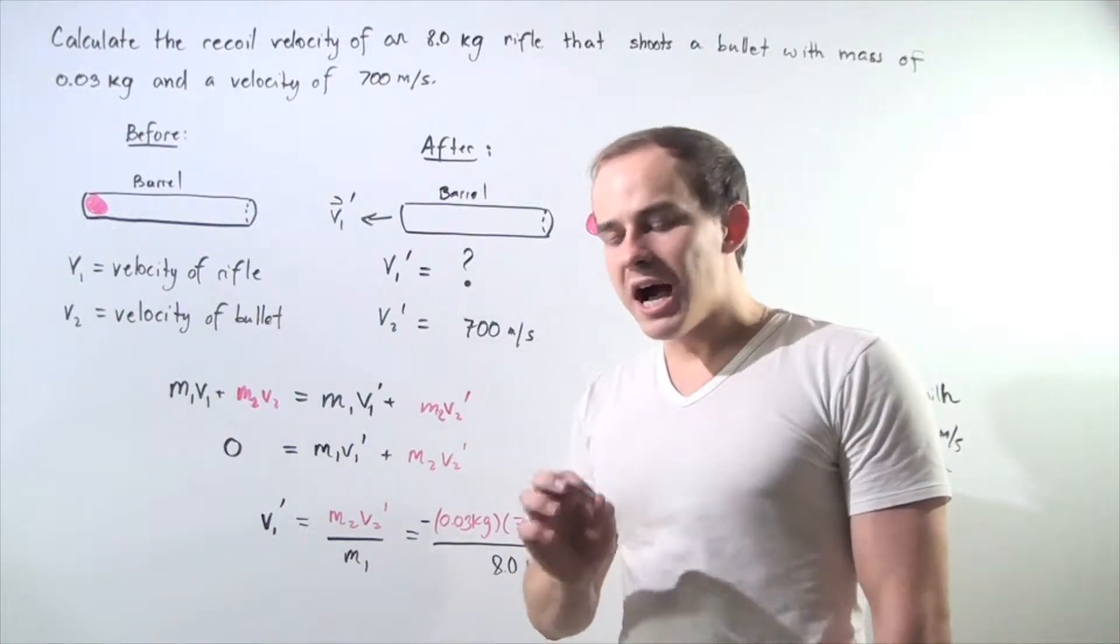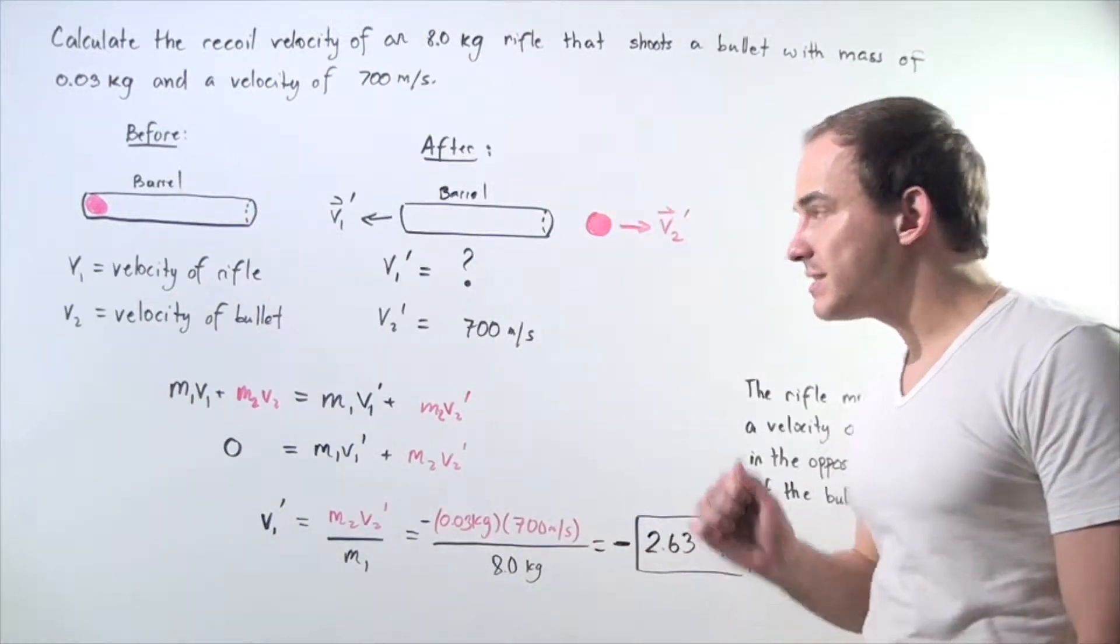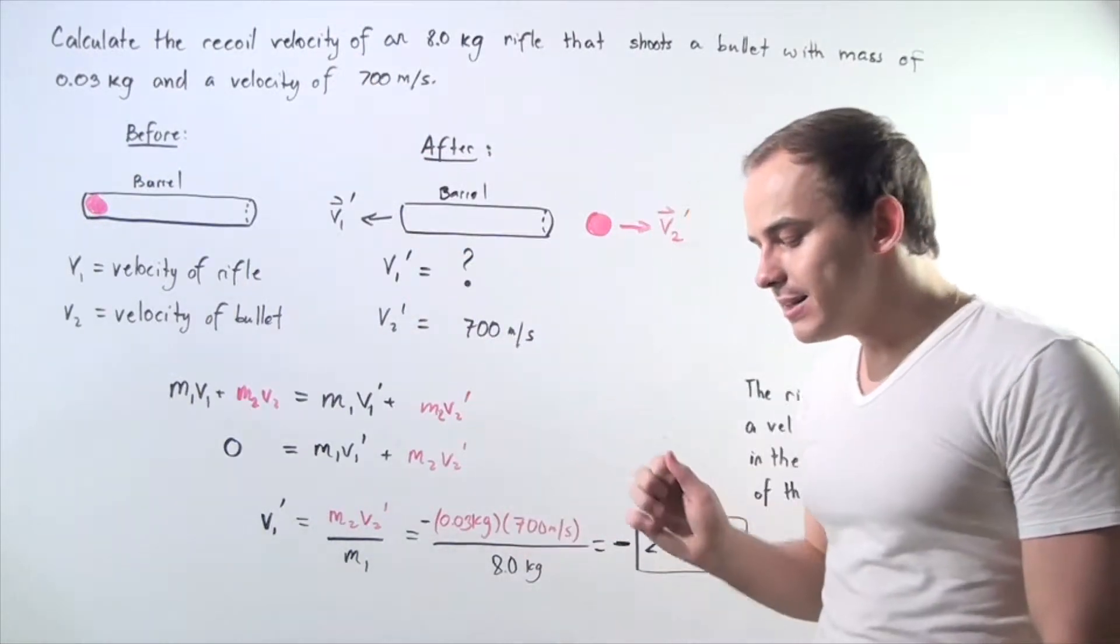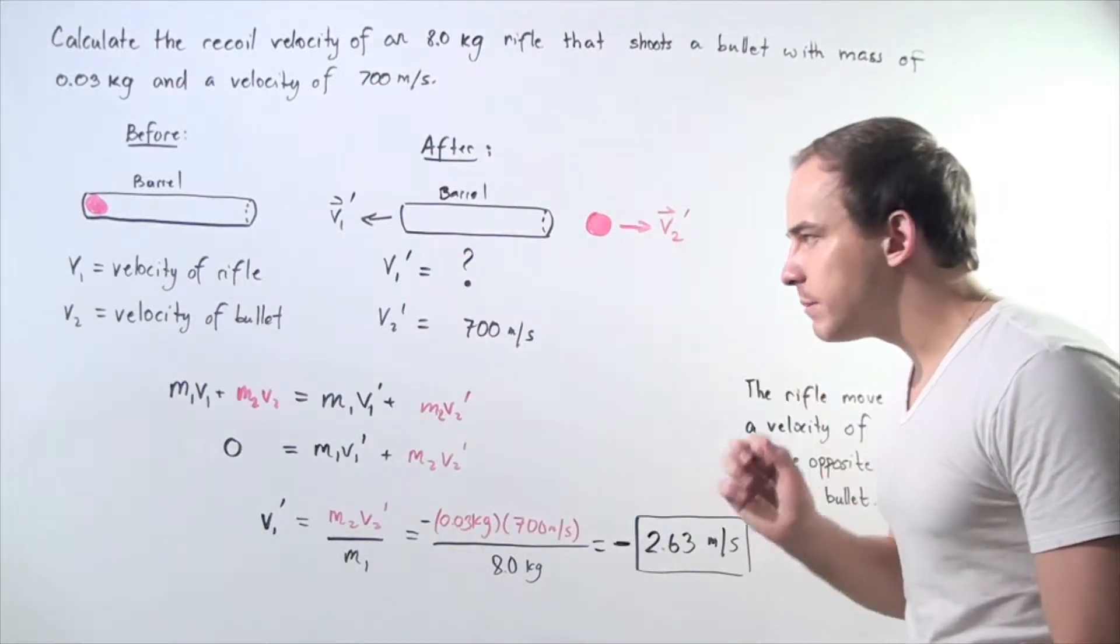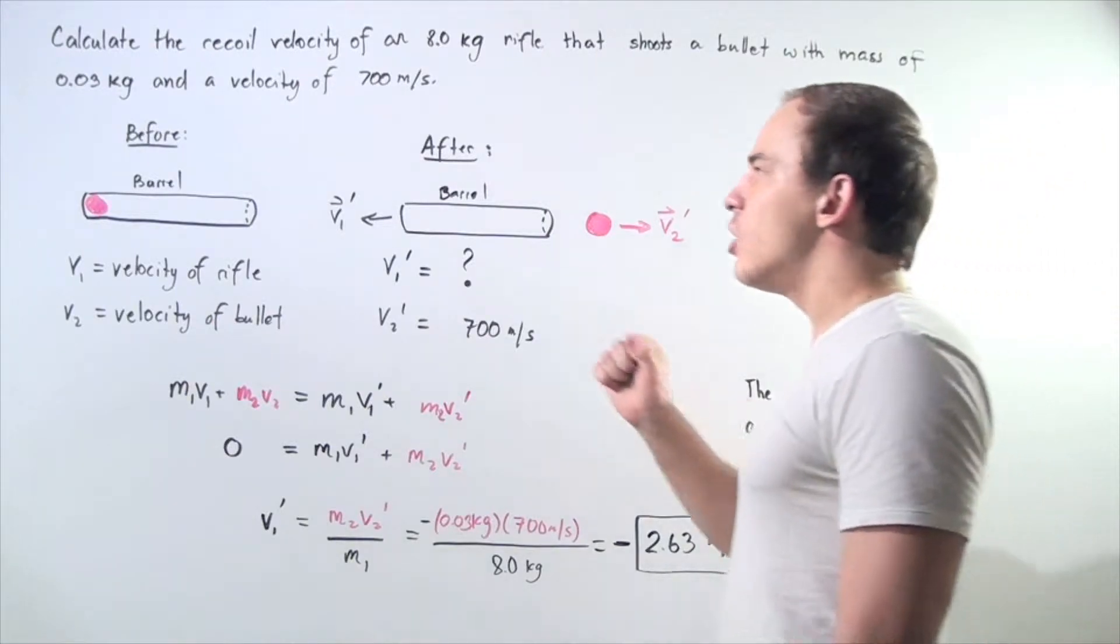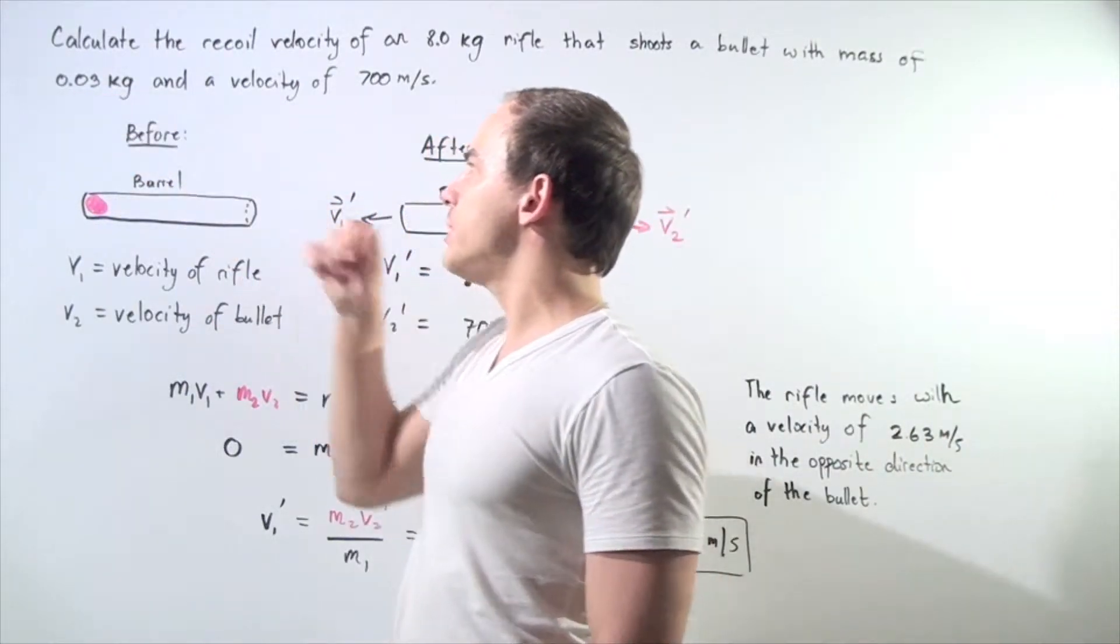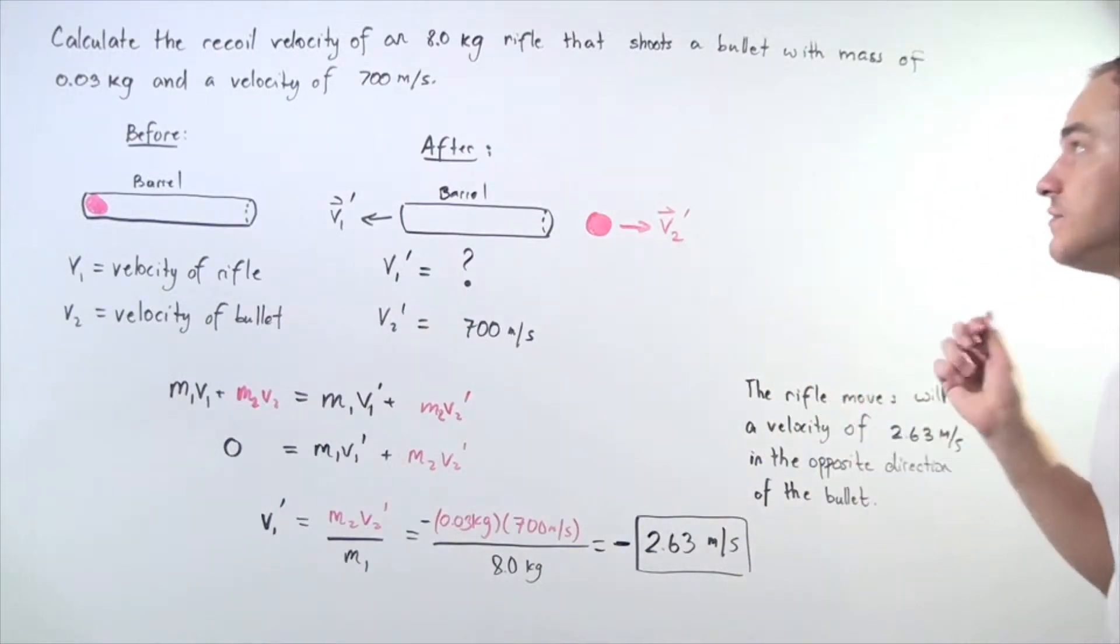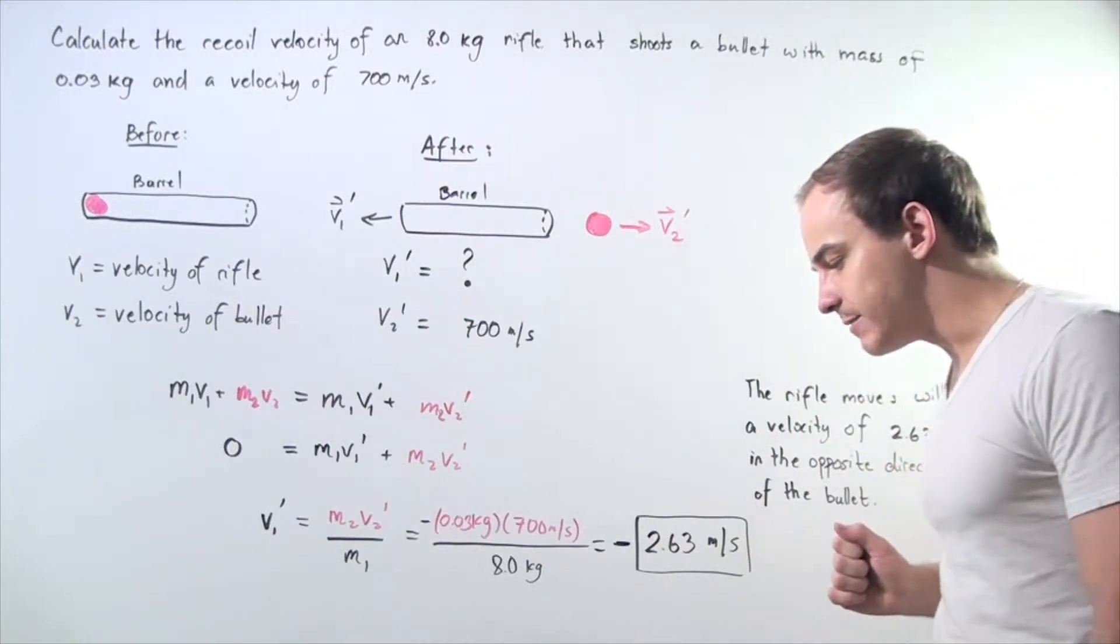Let's use the law of conservation of momentum to calculate the recoil velocity of an 8 kilogram rifle that is capable of shooting a bullet with a mass of 0.03 kilograms and a velocity of 700 meters per second.